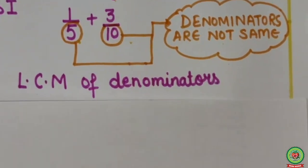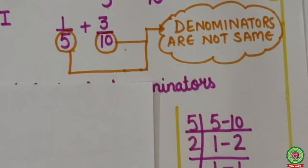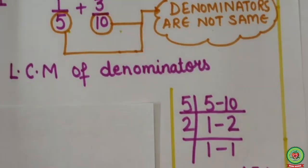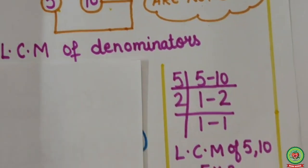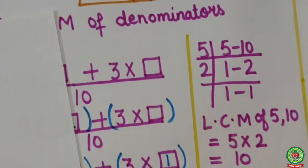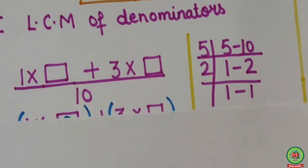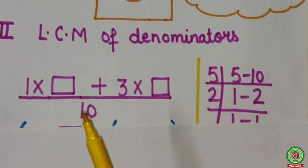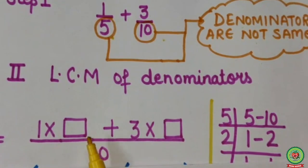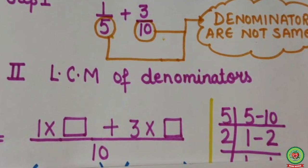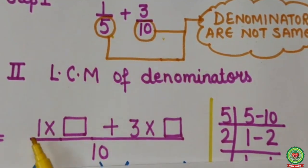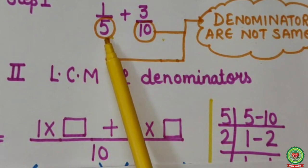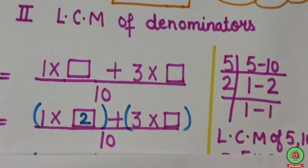We will take LCM of 5 and 10 using the antenna method. By antenna method, it is coming first on table of 5, then on table of 2. So LCM of 5 and 10 equals 5 into 2, that is 10. Now to change these fractions into like fractions, we need a common denominator. Take LCM as the common denominator, so here it is 10. Multiply the numerator with a suitable number to make its denominator equivalent to 10. Check the denominators — here 5 is the denominator. In table of 5, 10 will come at 2. So I will write 2 here.